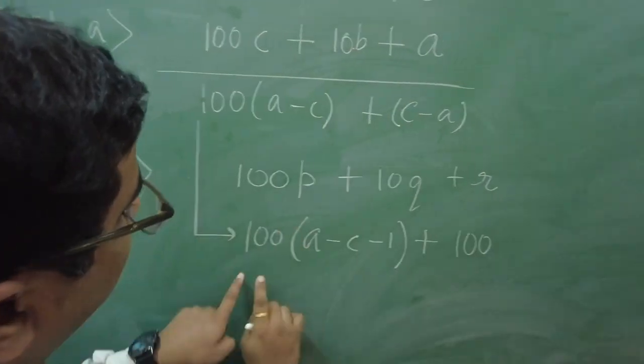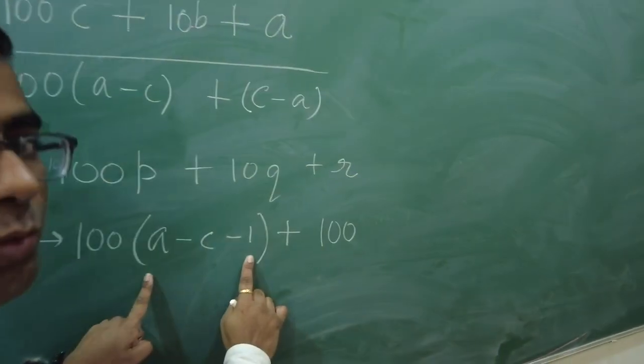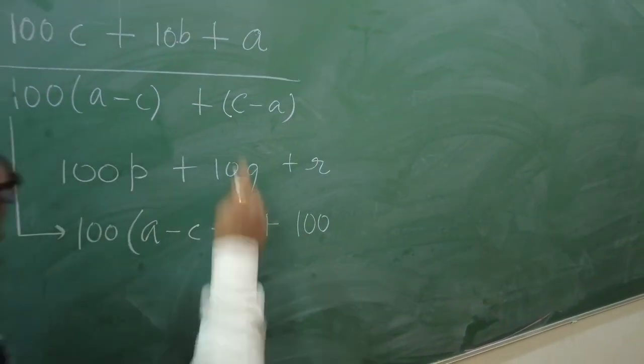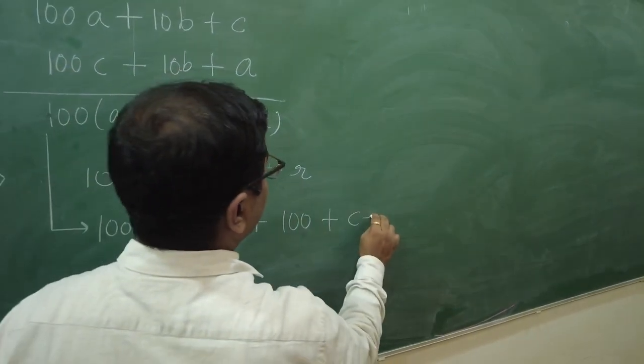So, if you see, for this first term, I have written 100 times A minus C minus 1 plus 100. So, total is this term only. Now, the rest of it is C minus A. Isn't it? I hope there is no problem so far.